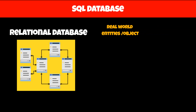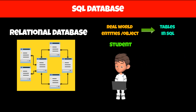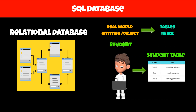Each table in SQL is inspired by real-world entities or real-world objects. For example, if we are storing data of students, we will create a table with the name 'student' which will have columns such as the name of the student and their email ID.